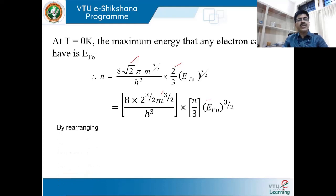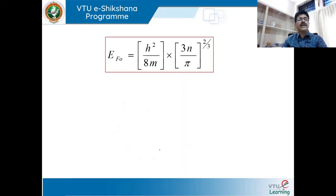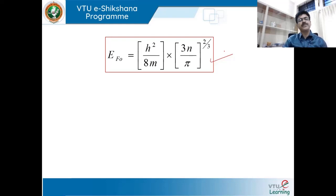Rearranging this equation for EF0^(3/2) gives EF0^(3/2) = h³/(8m^(3/2)) × (3N/π). Solving for EF0 gives EF0 = h²/(8m) × (3N/π)^(2/3). This is the expression for Fermi energy at absolute 0 Kelvin. This equation clearly tells us that the Fermi energy at absolute 0 Kelvin depends only on the number of electrons present per unit volume of the material.